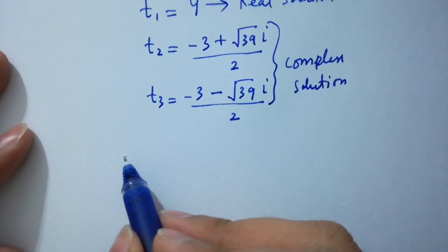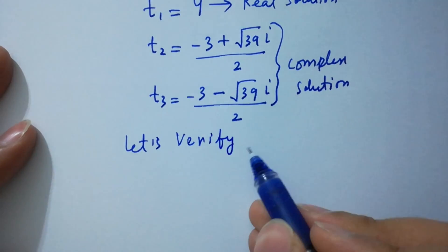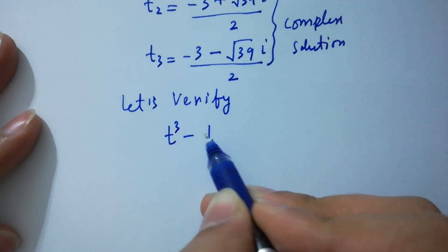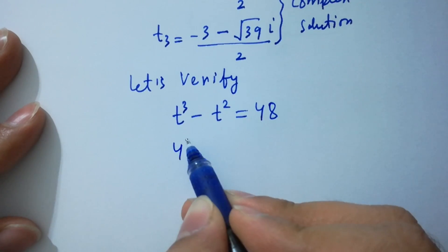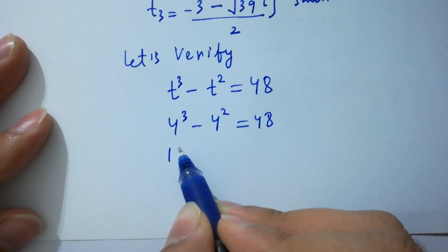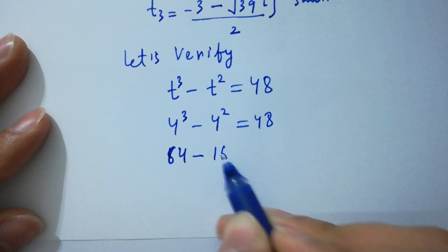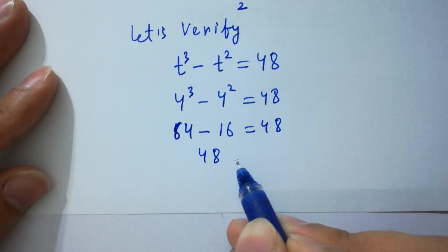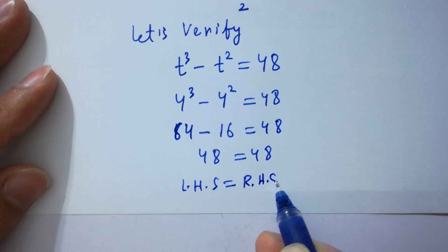Now let's verify. t cube minus t square equals 48. For t equals 4: 4 cube minus 4 square equals 48. 4 cube is 64, and 4 square is 16. 64 minus 16 is 48, which equals 48. Left hand side equals right hand side. Verified.